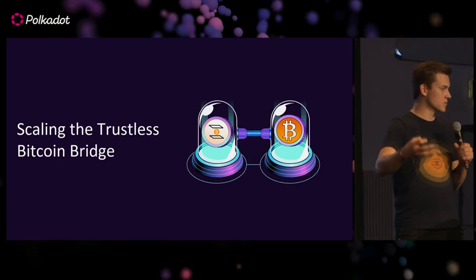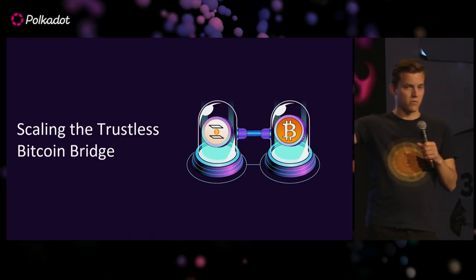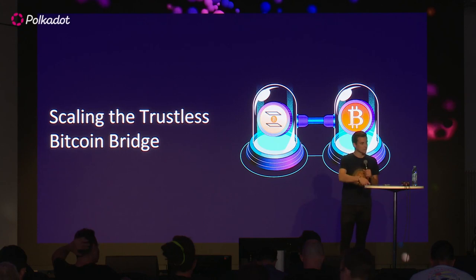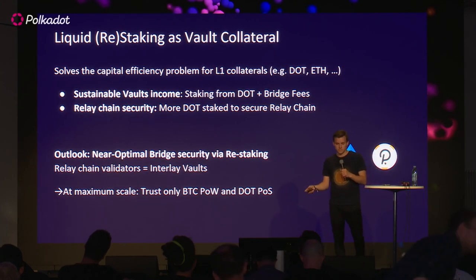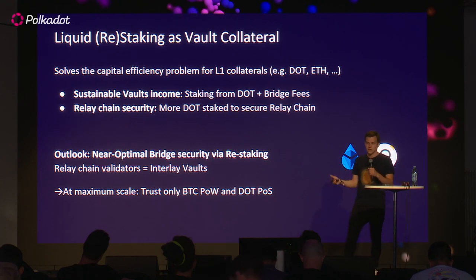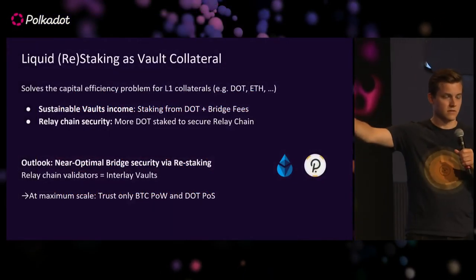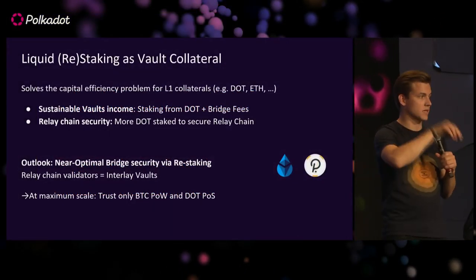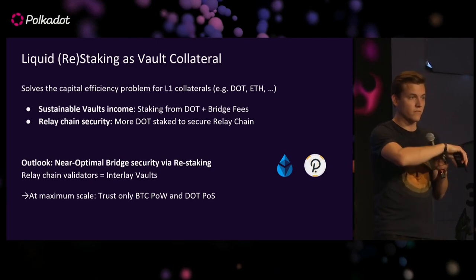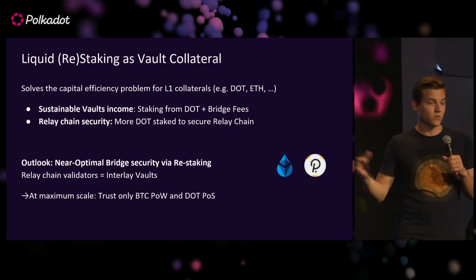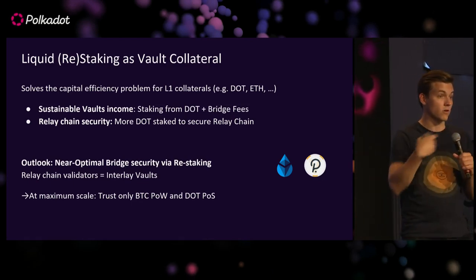One challenge of this bridge model is scaling, because locking up collateral introduces a capital efficiency challenge — vaults need to put up collateral, limiting the amount of Bitcoin in the system, and this capital is competing against other DeFi yield opportunities. We now scale this by introducing liquid restaking: vault operators can first stake DOT and ETH, then use the liquid restaking representation as collateral, earning both bridge revenue and staking rewards, which also drives more DOT to relay chain staking.